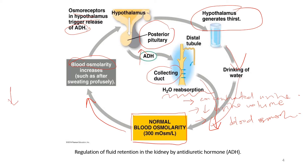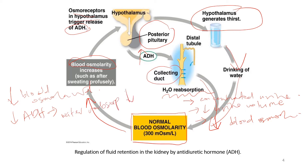However, if blood osmolarity decreases, it will cause ADH to drop. When ADH drops, it will cause water reabsorption to decrease, which will increase the discharge of urine — meaning we are going to produce a large amount of diluted urine.